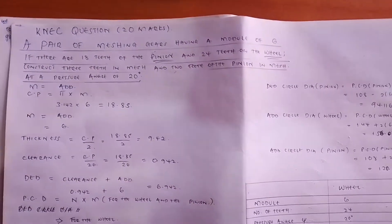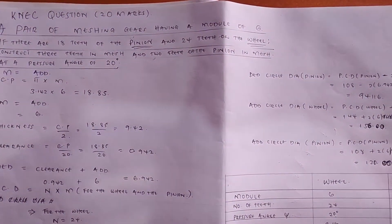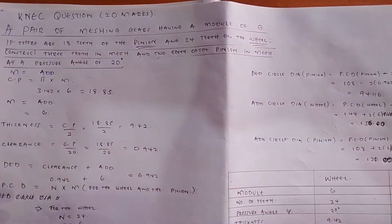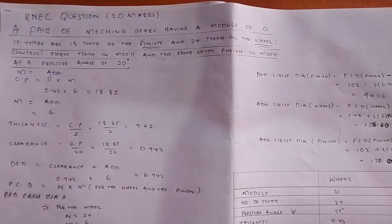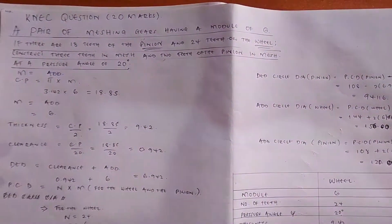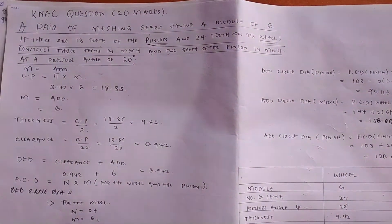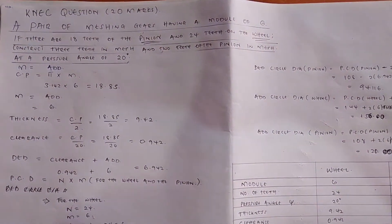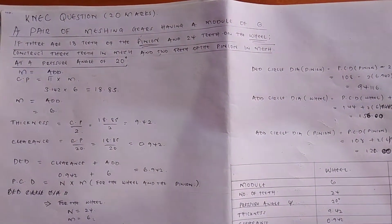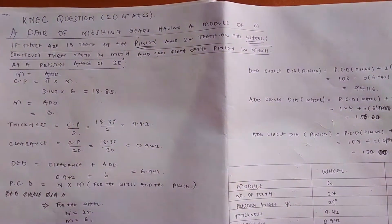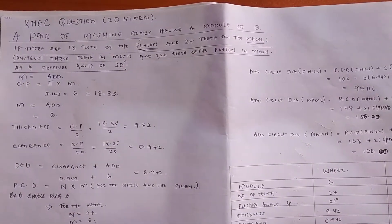Good evening students. Today I want to show you how to do a NECA past paper question. Remember in the previous video I have shown you how to look for the CP, the module, the thickness, the clearance, the dedendum, the PCD, the dedendum circle diameter and the addendum circle diameter.